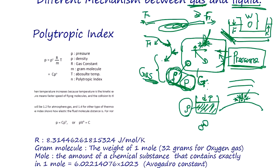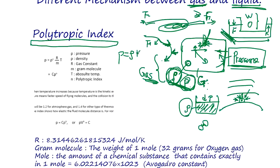For gas, we need to know the relationship between density and pressure. There's a famous relationship called the polytropic index, where pressure and density have a relationship: pressure equals k times density to the power n. This k equals R over M times temperature T, and n is the polytropic index.